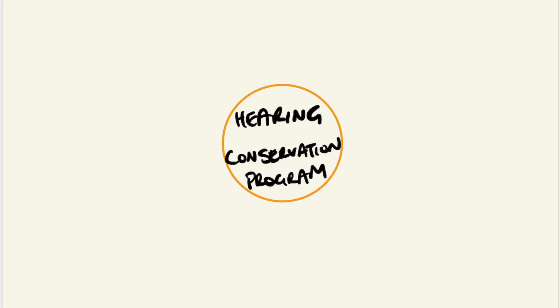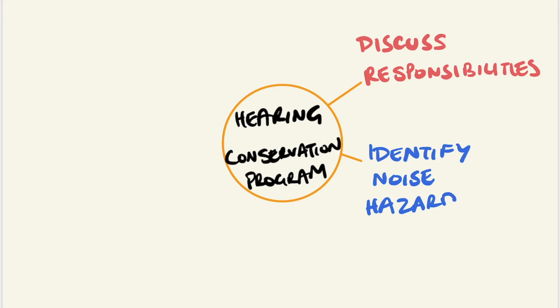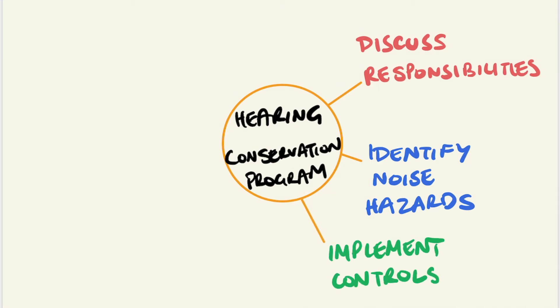In terms of the specific details of a hearing conservation program, this should include discussing responsibilities. It is the responsibility of the employer to provide a healthy and safe work environment, as well as to be familiar with the noise standards and regulations. You need to identify the noise hazards, which includes performing a noise risk assessment specifically targeted towards identifying employees to be included in the program and high-risk work tasks or work areas. This is done via worksite surveys, noise monitoring, and screening audiometry. Implementing the appropriate controls — whether engineering, administrative, or PPE — as described in the previous video.